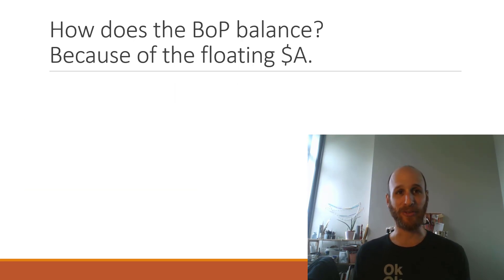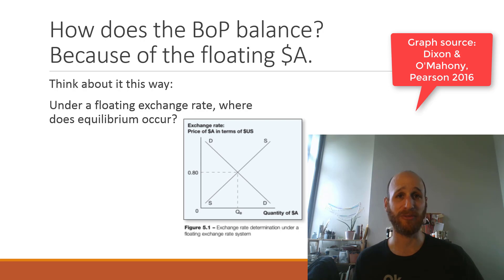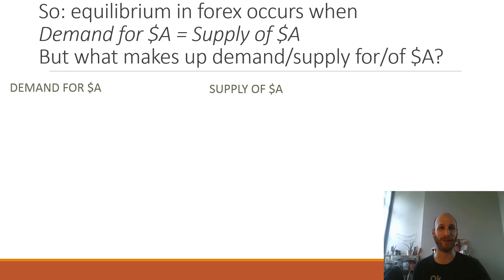The reason the balance of payments balances is because of Australia's floating Australian dollar. Under a floating Australian dollar, think about where equilibrium occurs. If we have this graph here, we know that equilibrium is $0.80 US. Equilibrium in foreign exchange markets occurs when the demand for Australian dollars equals the supply of Australian dollars.